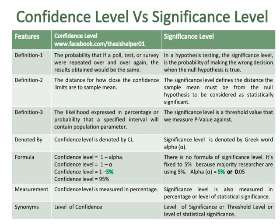Definition 2 of confidence level is the distance for how close the confidence limits are to a sample mean, while the significance level defines the distance the sample mean must be from the null hypothesis to be considered statistically significant. Definition 3 of confidence level is the likelihood expressed in percentage or probability that a specified interval will contain the population parameter, while the significance level is a threshold value that we measure the p-value against.